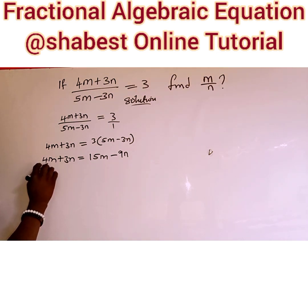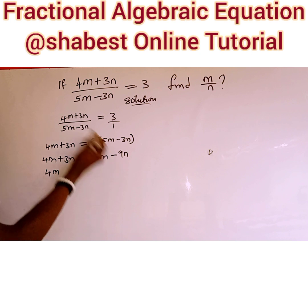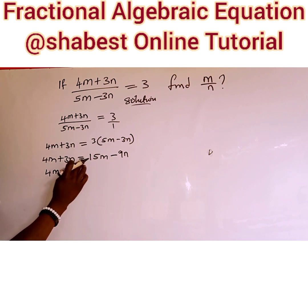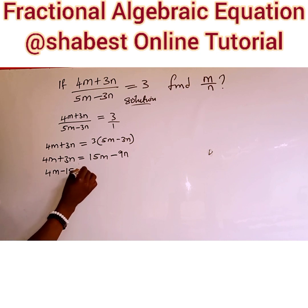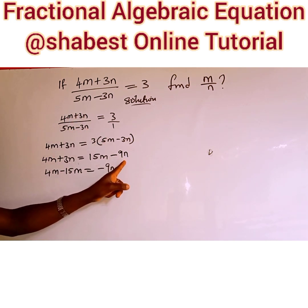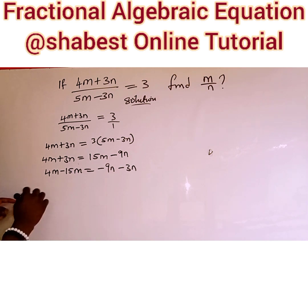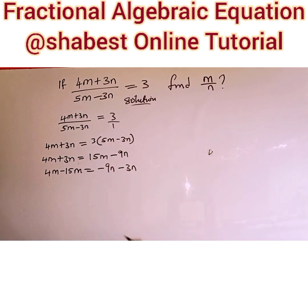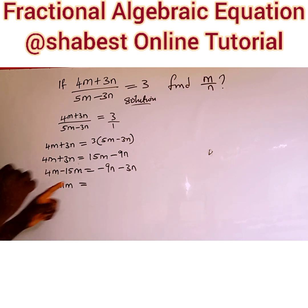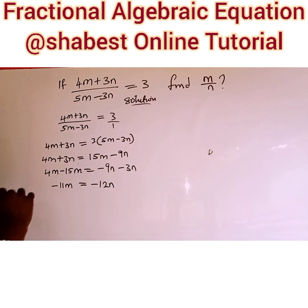We have successfully opened the bracket. Now we collect like terms. We have 4m on the left and 15m on the right — when a positive term crosses the equality sign it changes to negative, so we get 4m minus 15m. Similarly, the positive 3n crosses to meet minus 9n and changes to minus 3n. So 4m minus 15m gives minus 11m, and minus 9n minus 3n gives minus 12n.